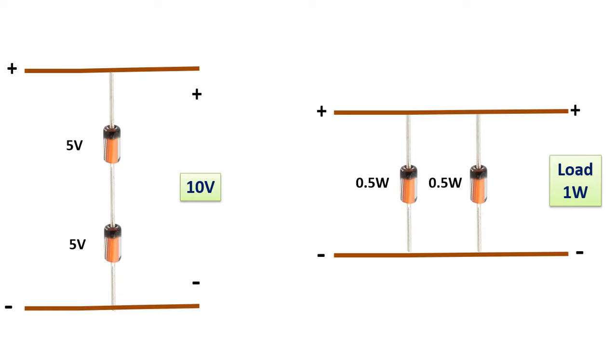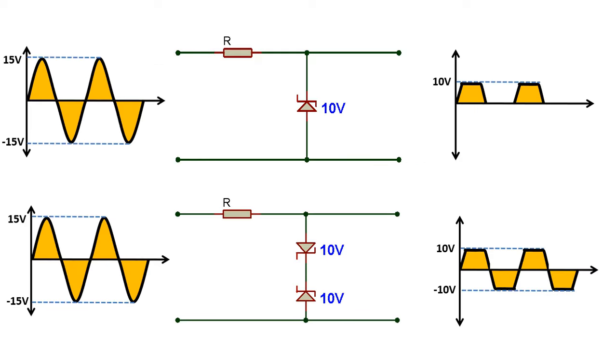Zener diodes are used not only as a regulation process in direct current, but also in clipper circuits for clipping operations at the desired value in alternating current. As in the examples here, the sine-shaped AC input voltage is clipped at the output by means of Zener diodes.